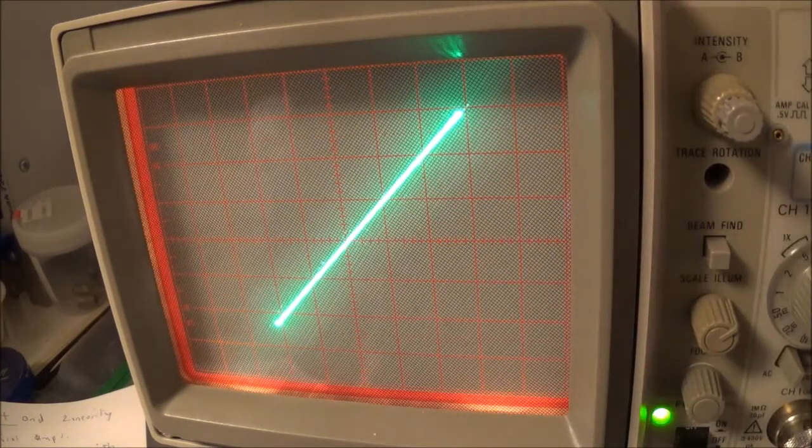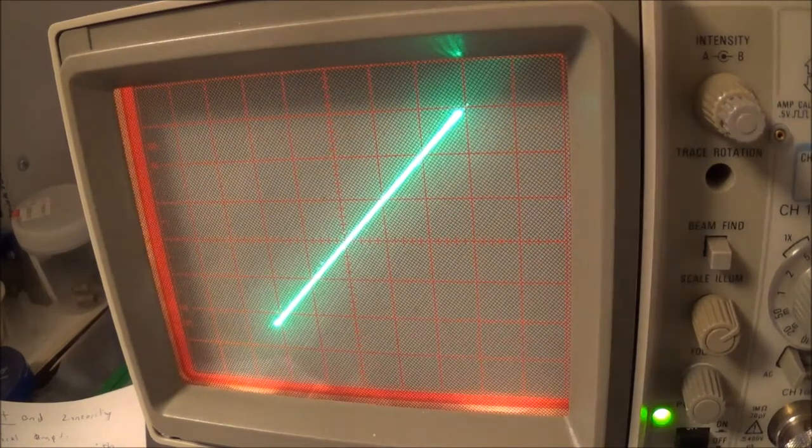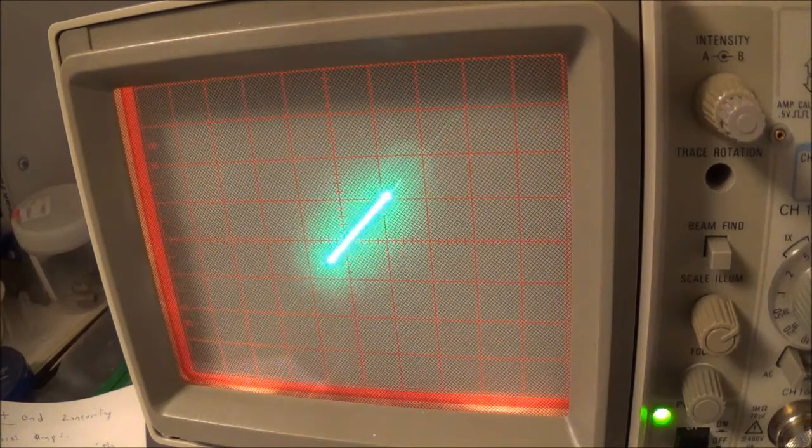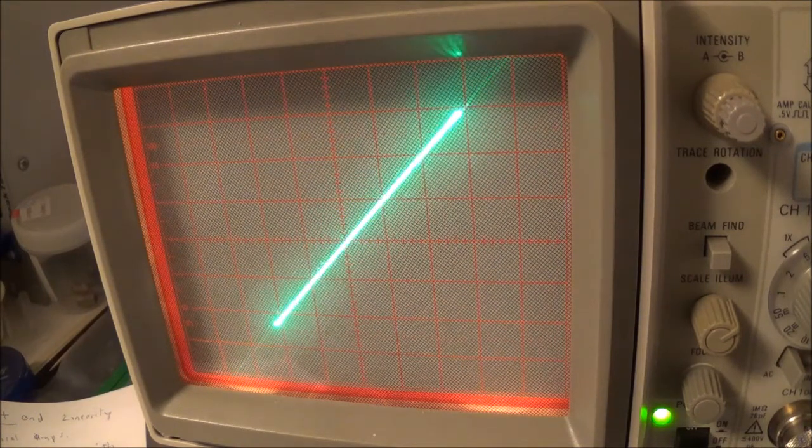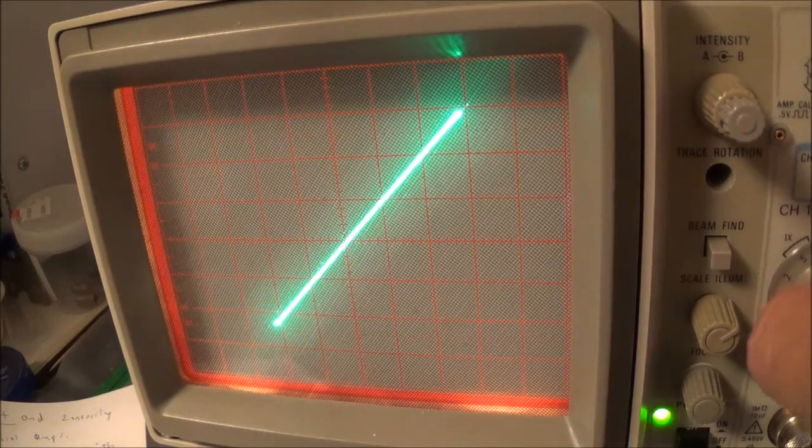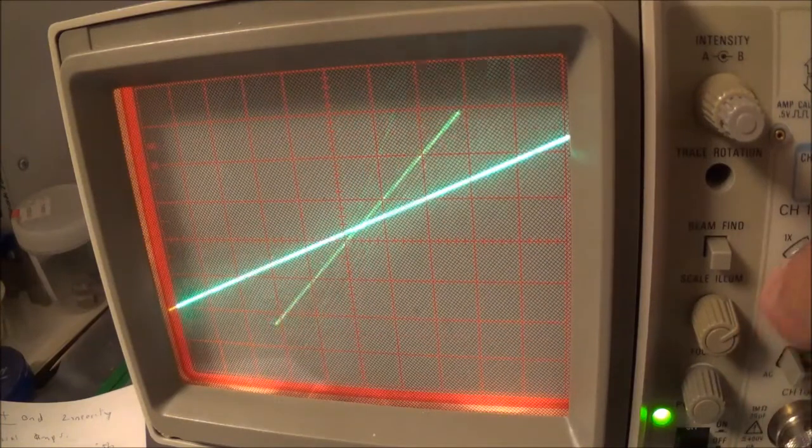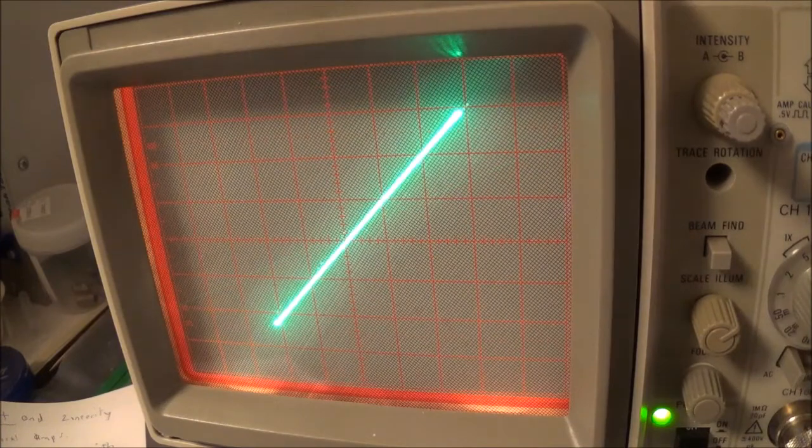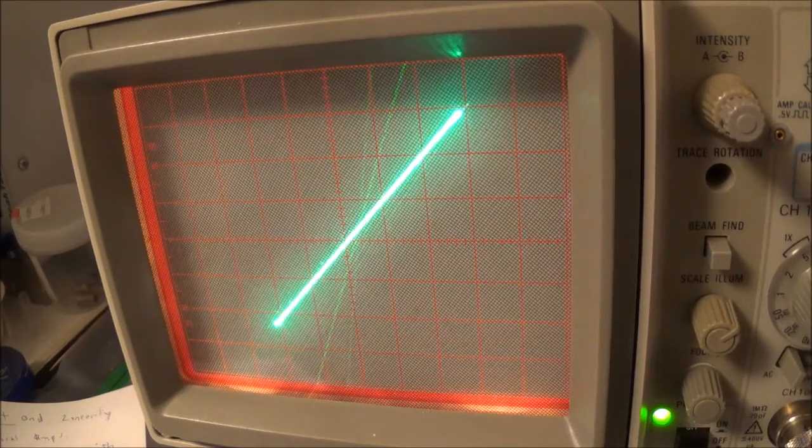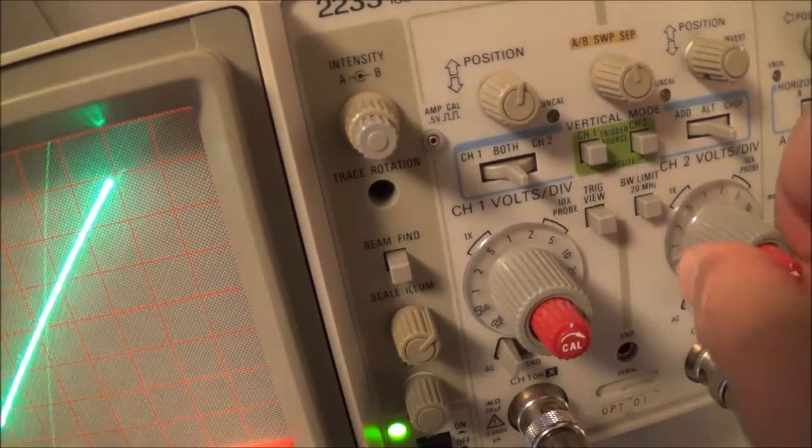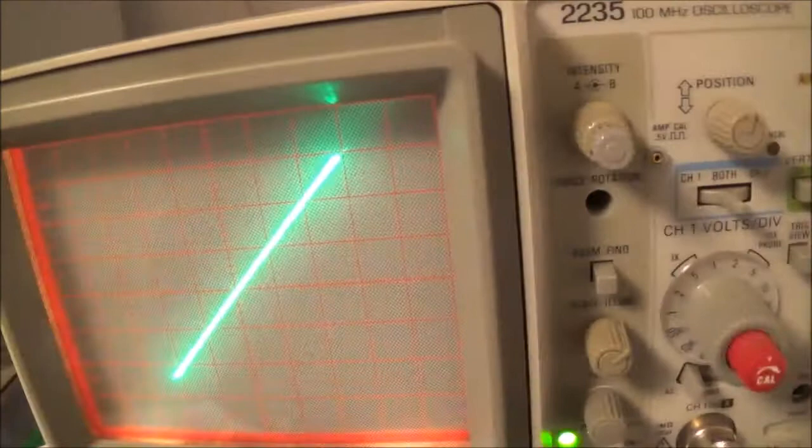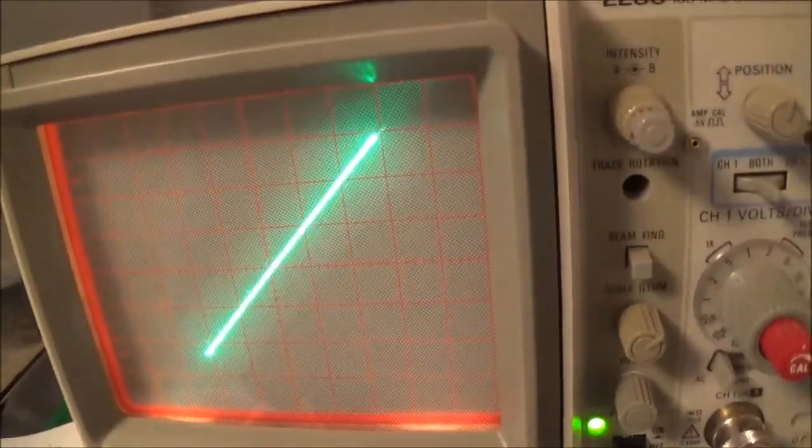Now if I adjust the output of the signal generator, here you can see what happens - I can make it larger or smaller. And here by adjusting the vertical controls, you can see what happens. I like to get it at a 45 degree diagonal because that's the way I learned it.